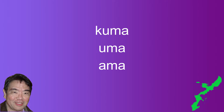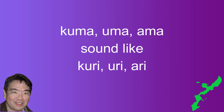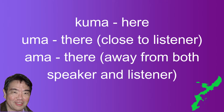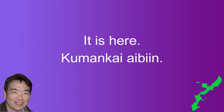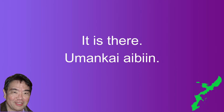In Uchinaguchi, "where did I put my keys?" is "kage ma ucha ga" in casual form and "kage ma uchibita ga" in polite form. I want to present three location words related to "where": kuma, uma, and ama. Kuma means "here." Uma means "there" close to the listener but away from the speaker. Ama means "there" away from both speaker and listener. So in answer to "where is my keys?" you could say "kumangkai aibing" (here), "umankai aibing" (there near you), or "amankai aibing" (there away from both of us).